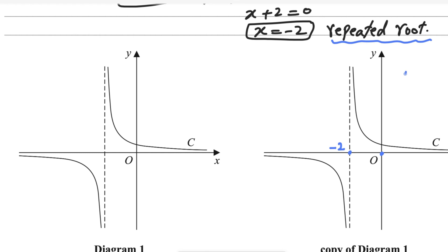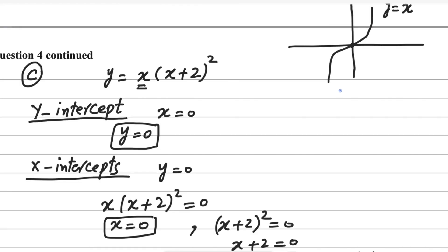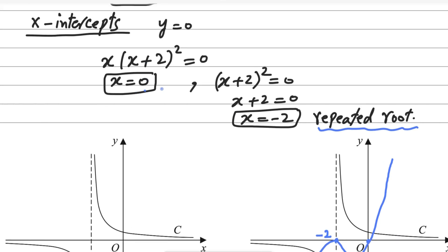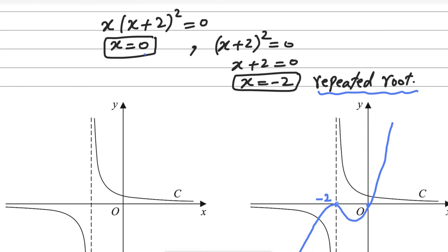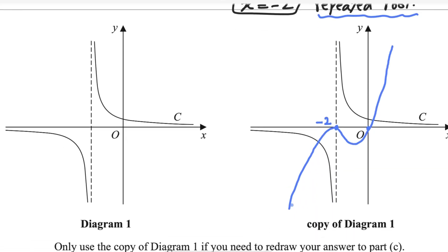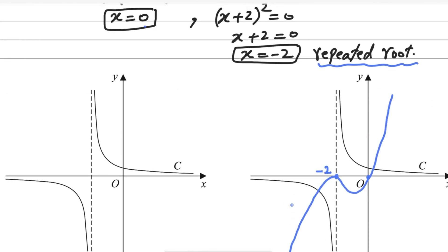So the graph passes through the origin at x = 0, then takes a turn at the repeated root x = −2, touching but not crossing there. The graph will pass through the origin, come back and touch x = −2, then continue — it never crosses through −2 because that would give three distinct x-intercepts, but we only have two: 0 and −2. This is the shape of the sketch for this function.